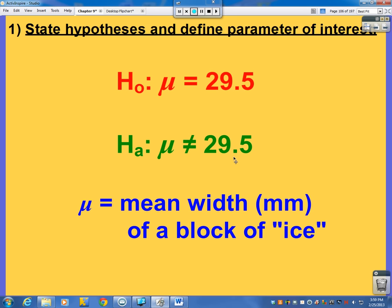So our hypotheses. 29.5, where it's not 29.5, where mu is our mean width in millimeters of a block of quote-unquote ice. Thank you, Milton and Bradley. Jerks.